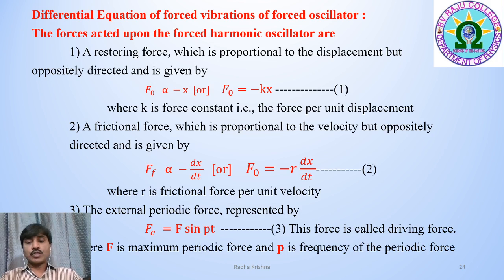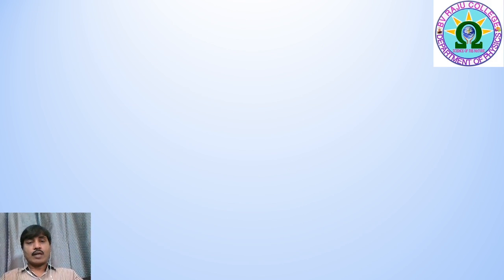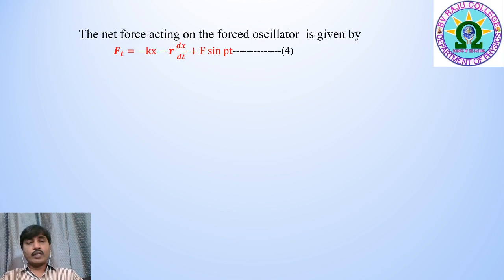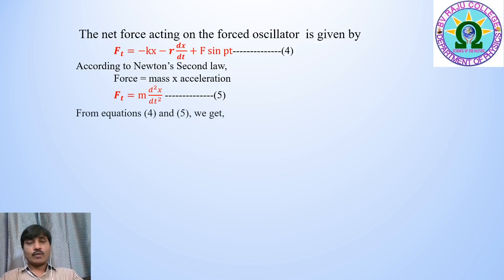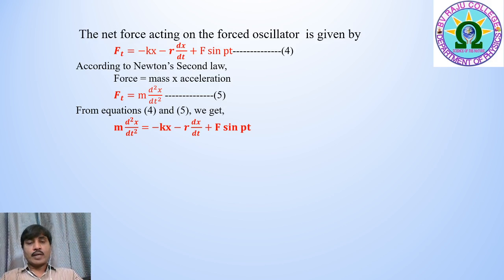This external periodic force is also called the driving force. So a forced oscillator is acted upon by three forces. The net force is F_total = −kx − r(dx/dt) + F sin(pt). According to Newton's second law, force equals mass times acceleration, so F_total = m(d²x/dt²), where m is the mass of the oscillator and d²x/dt² is the acceleration. From these two equations, we get m(d²x/dt²) = −kx − r(dx/dt) + F sin(pt).